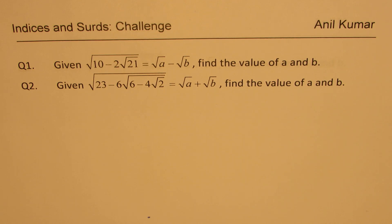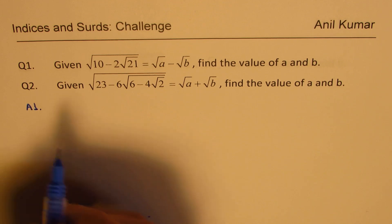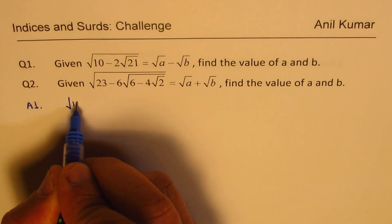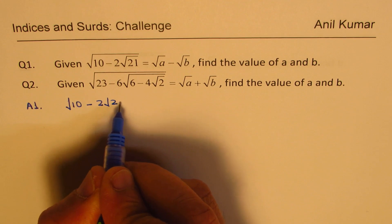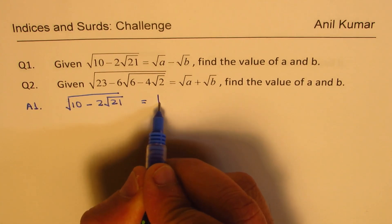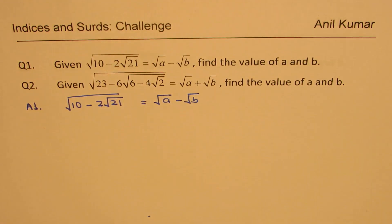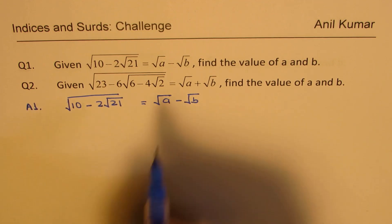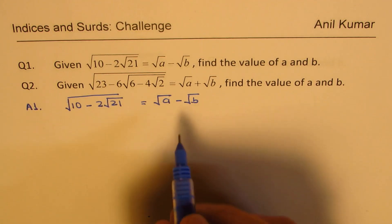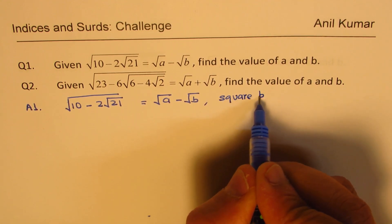You can pause the video, answer this question, and then look into my suggestions. Let's solve question number one first. We are given square root of 10 minus 2 square root of 21, and this is equal to square root of A minus square root of B. What we could do is square both sides — that is the strategy.